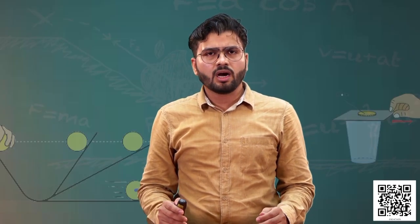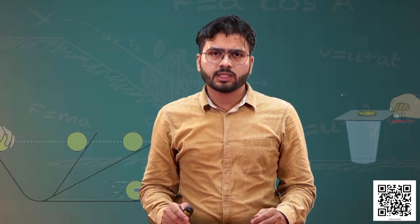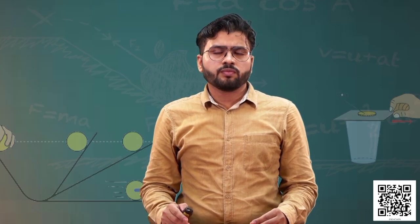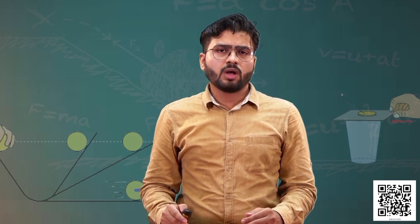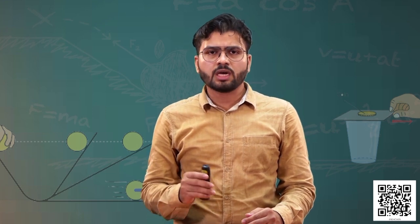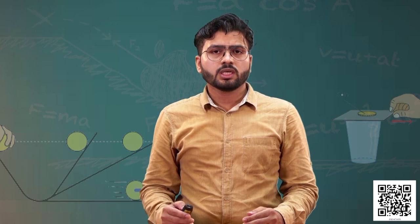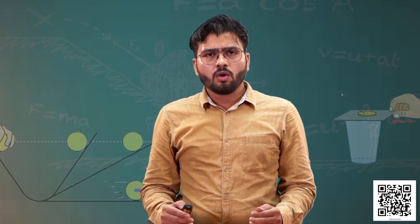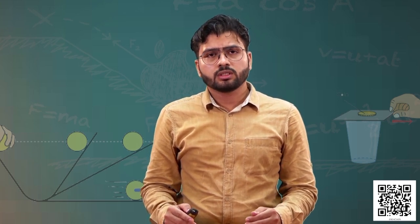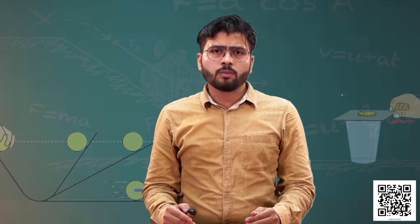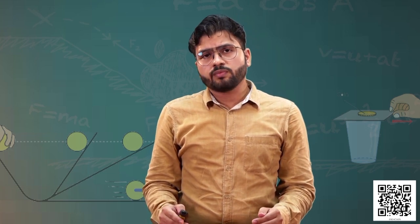A pair of forces acting on the same object with equal magnitude but opposite in direction — for example, if you apply 5 newtons of force in the east direction and 5 newtons of force in the west direction, both forces acting opposite to each other will cancel out. This type of force is called balanced force.